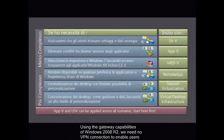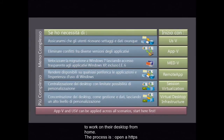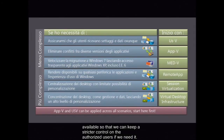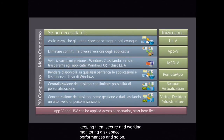Using the gateway capabilities of Windows 2008 R2, we need no VPN connection to enable users to work on their desktop from home. The process is: open an HTTPS interface, authentication, access to the desktop. Additional security tools are available so that we can keep stricter control on authorized users if we need it. The technologies we're talking about are terrific and simple to deploy. The real problem is keeping them secure and working — monitoring disk space, performance, and so on.